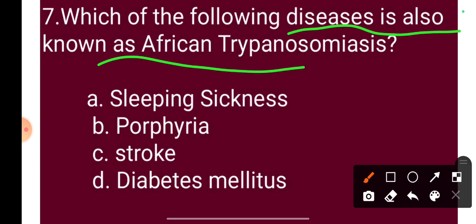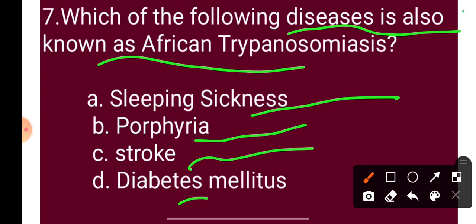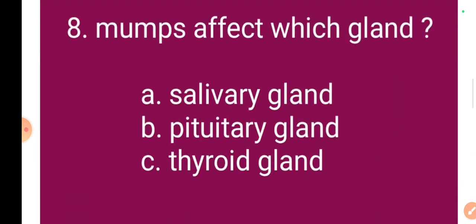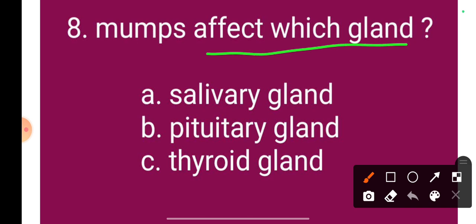Question 7: Which of the following diseases is also known as African trypanosomiasis? Option A: sleeping sickness, Option B: porphyria, Option C: stroke, Option D: diabetes mellitus. The correct answer is Option A: sleeping sickness, which is also known as African trypanosomiasis.